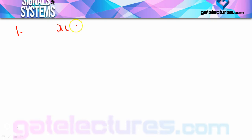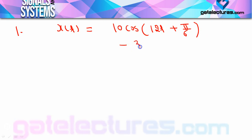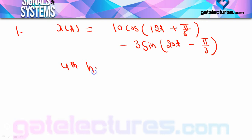The first numerical: signal x(t) is given to you, and it is given that it is a Fourier series representation of signal x(t) as 10cos(12t + π/6) − 3sin(20t − π/3). In this question it is asked to determine the amplitude of the fourth harmonic.